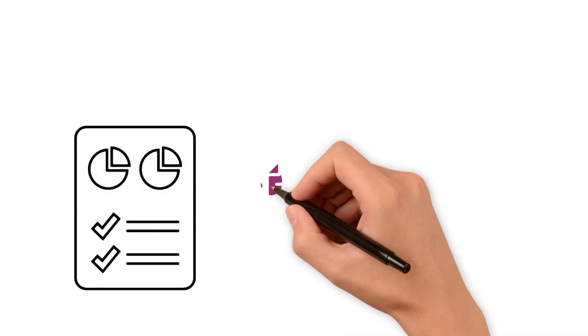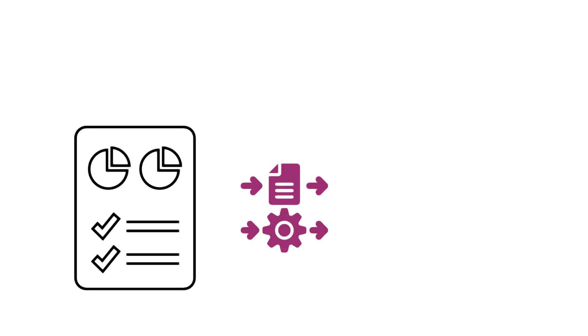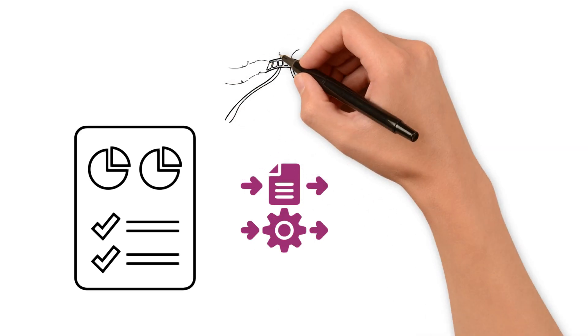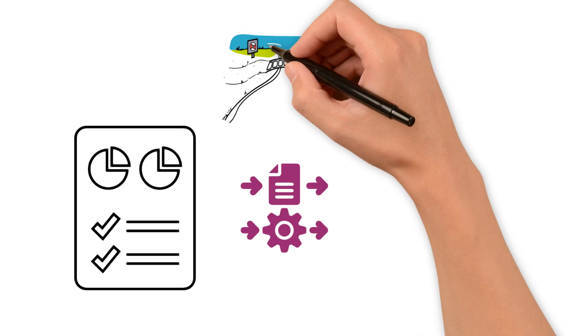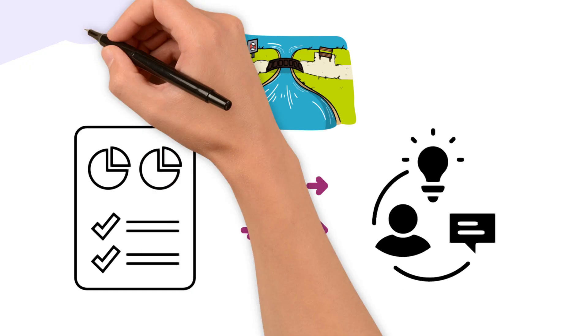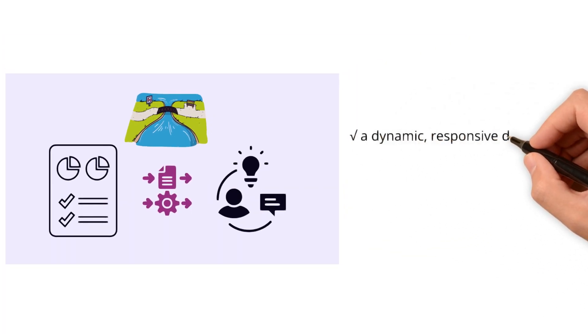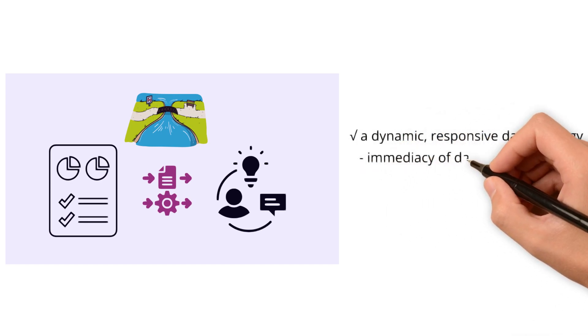In data terms, this means capturing and analyzing information instantly as it's created. Data flows continuously like a reverse constant stream, allowing immediate action on insights gained. Stream processing facilitates a dynamic, responsive data strategy where the immediacy of data handling is paramount.